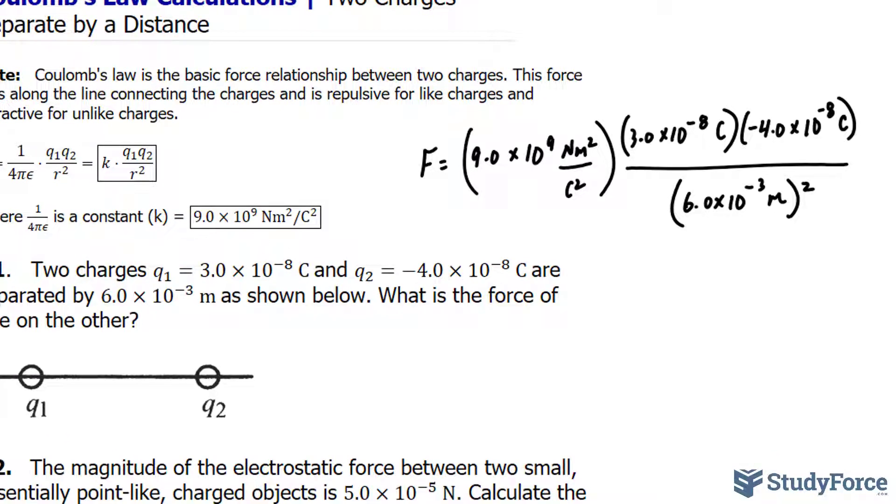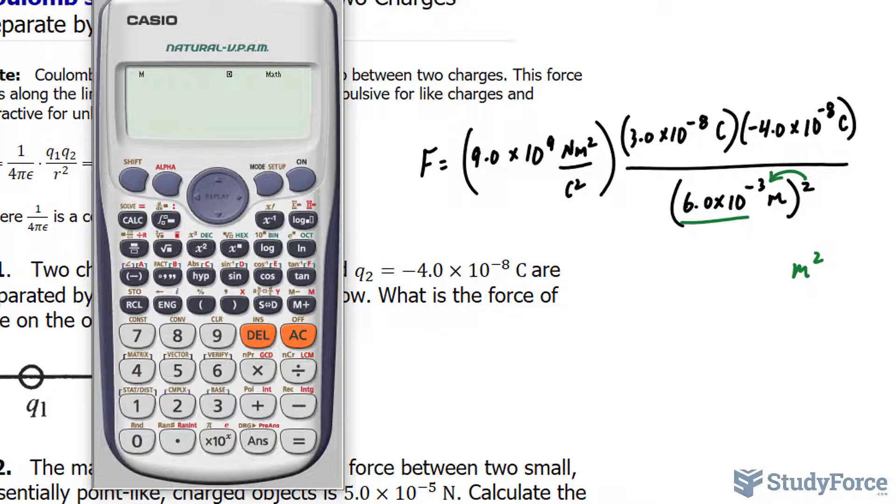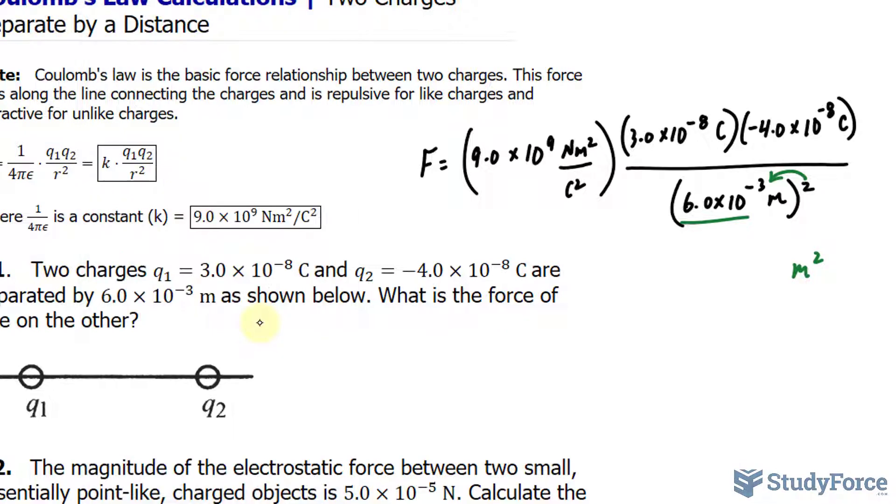The very first thing I'll do to calculate this is distribute this exponent to that number and to the m. So we will end up with meters squared. Using our calculator, we'll do 6.0 times 10 to the power of negative 3, raised to the power of 2, which makes 3.6 times 10 to the power of negative 5. I'll replace that entire denominator with that expression.